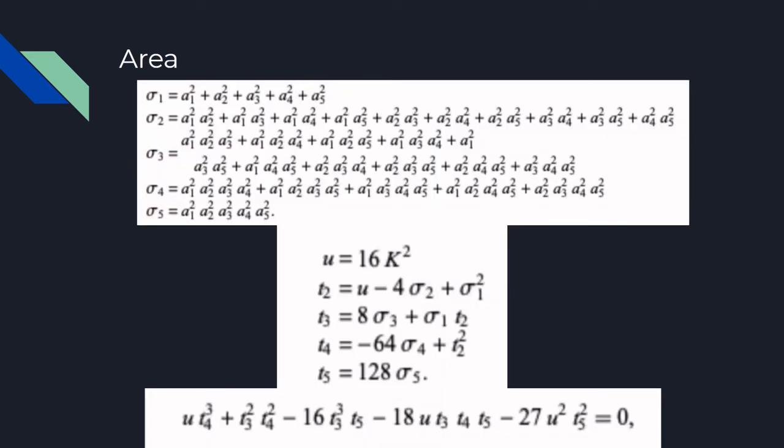On this slide, we construct a 7th degree polynomial in terms of a variable u, which comes from the side lengths of the pentagons, which is represented by a1, a2, a3, a4, and a5.